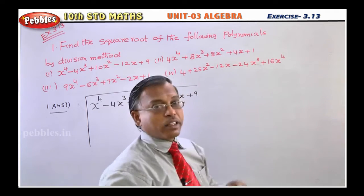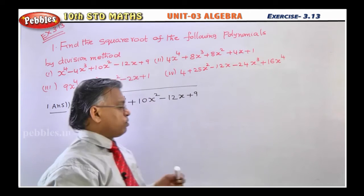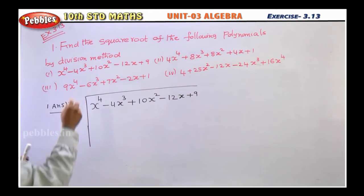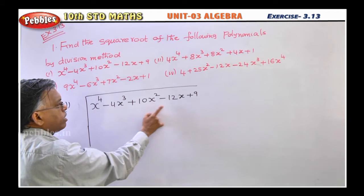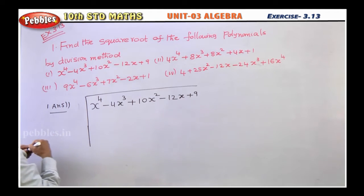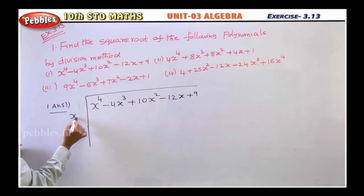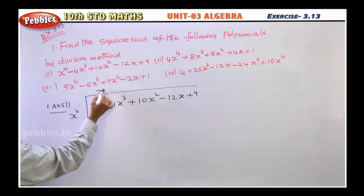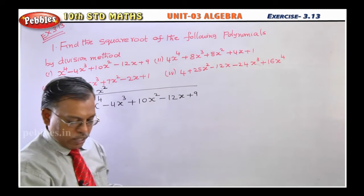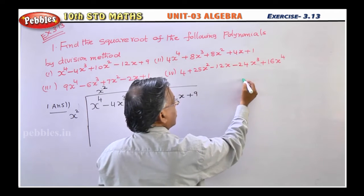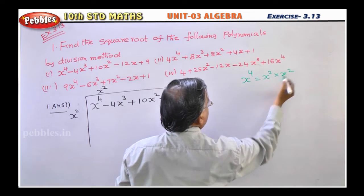There are four problems. I will do two problems; the other two you try yourself. For the first one, x⁴ - 4x³ + 10x² - 12x + 9, first you have to get rid of the first term. So you multiply with x² and x², meaning x⁴ can be written as x² into x².